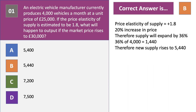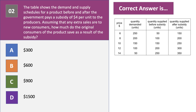Question two: the table shows the demand and supply schedules for a product before and after the government pays a subsidy of $4 per unit to producers. Assuming that any extra sales are to new consumers, how much do the original consumers of the product save as a result of the subsidy? Press pause and have a go.